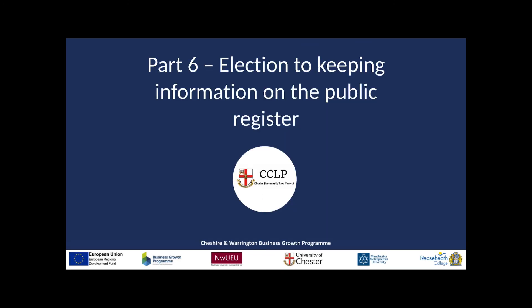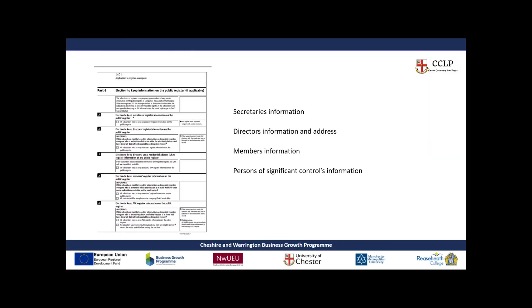Part six is the election of keeping information on the public register. As a private company, you are able to select certain things to keep on the public register as opposed to maintaining the registers yourself in your workplace, which can be easier for you. You simply select the boxes of the things you want to keep on the public register — for example, whether your secretary, directors, members, and persons of significant control agree to have their information on the public register. It is important that those individuals whose information is being published must give their consent.